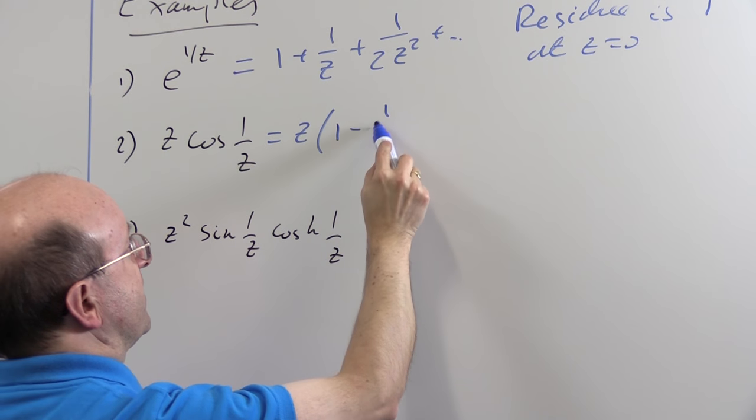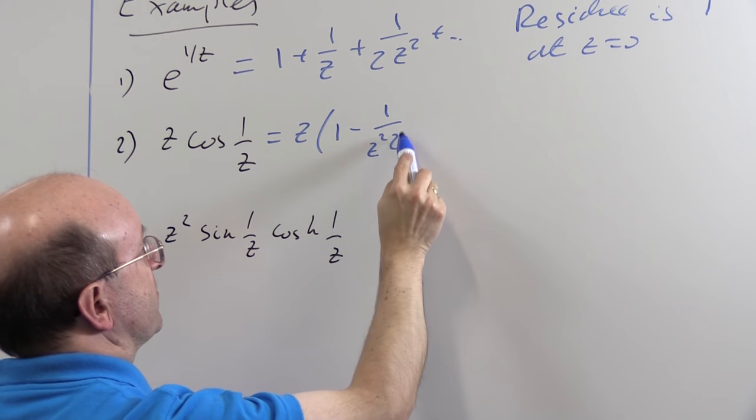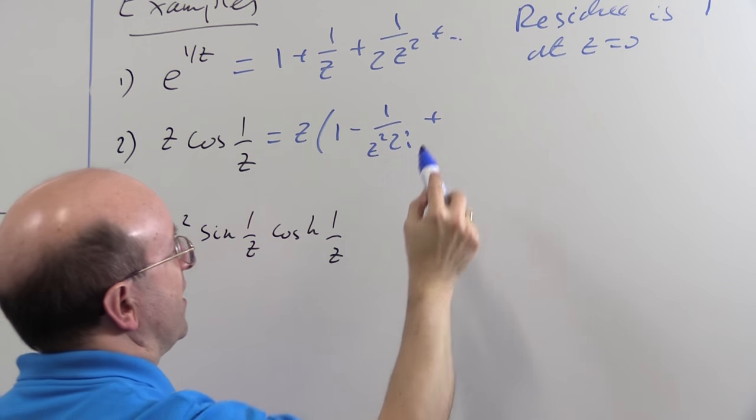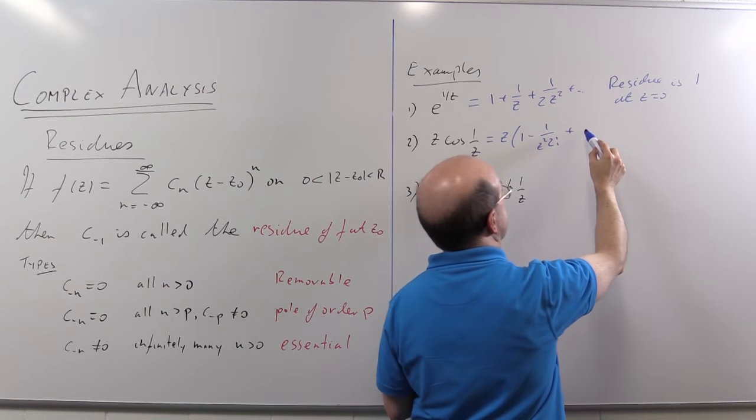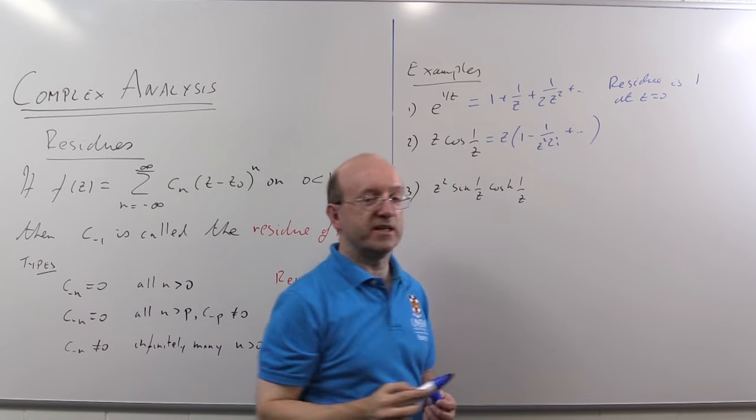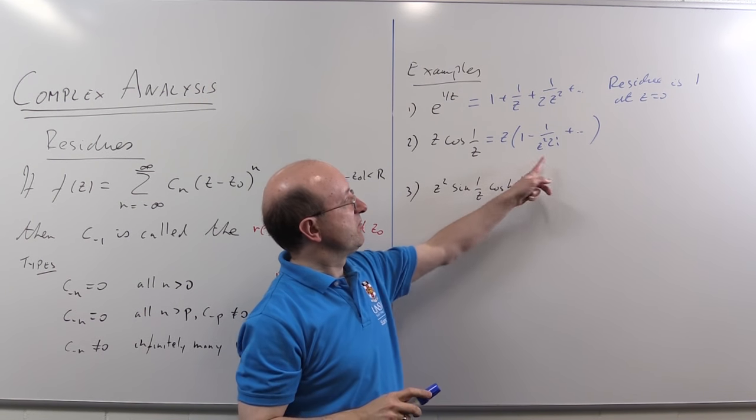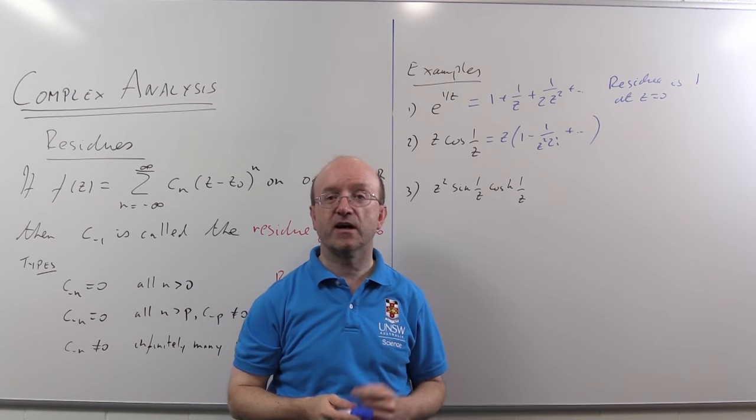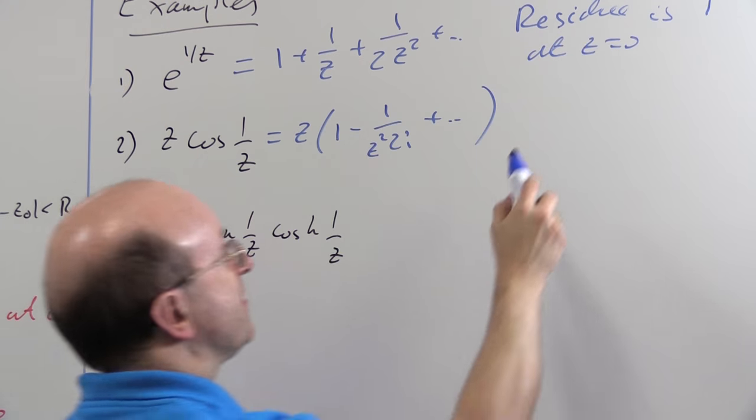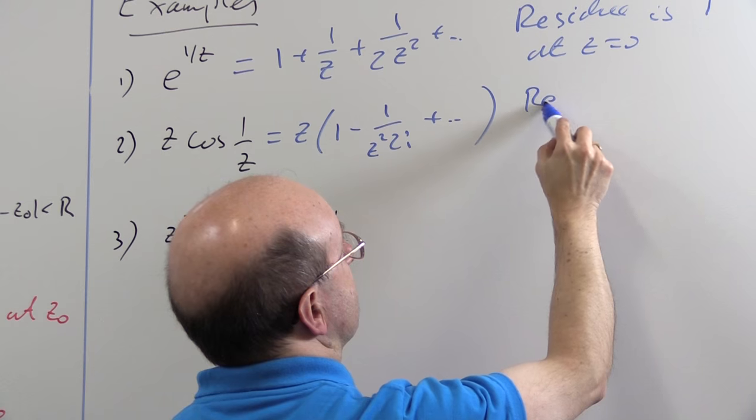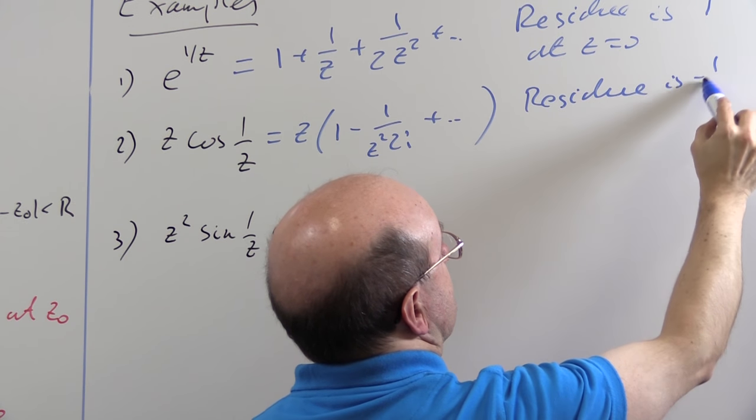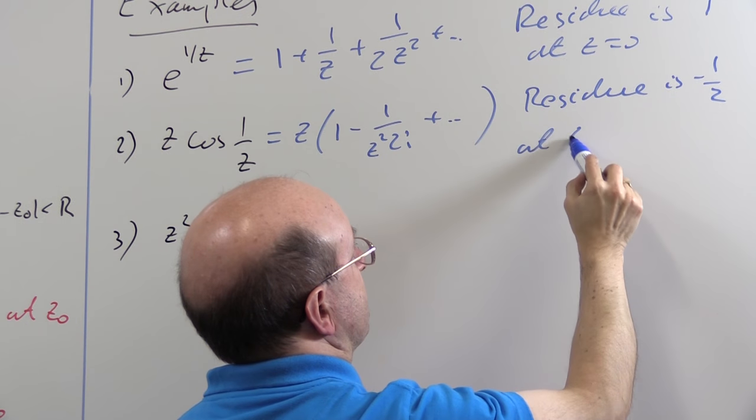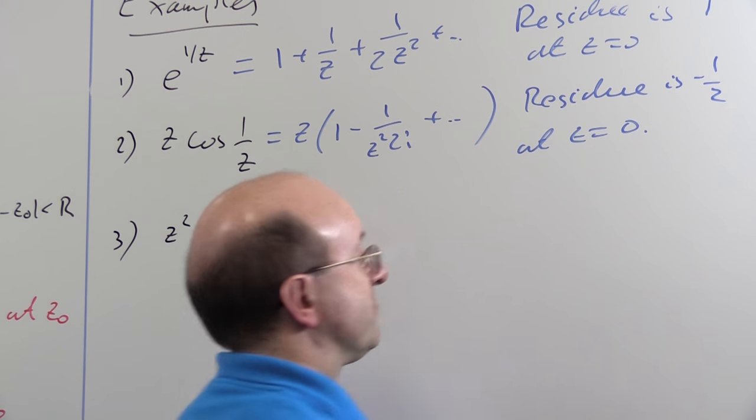So we get z into (1 - 1/(z²·2!) + ...). Once again I could stop there if I wanted. In fact I think I will. I don't need any more because clearly the coefficient of 1/z is going to be -1/2 and that's the residue. Here's -1/2 at z equals zero.